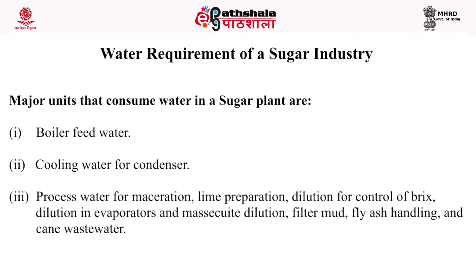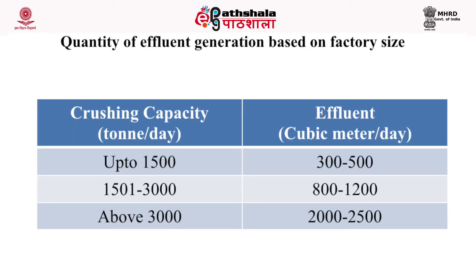Major units consuming water in a sugar plant include: boiler feed water, cooling water for condensers, process water for maceration, lime preparation, dilution for control of brix, dilution in evaporators, massecuite dilution, filter mud, fly ash handling, and cane wash water. The wastewater discharge standard for the sugar industry is 400 liters of wastewater per ton of cane crushed, though generation varies with mill capacity.